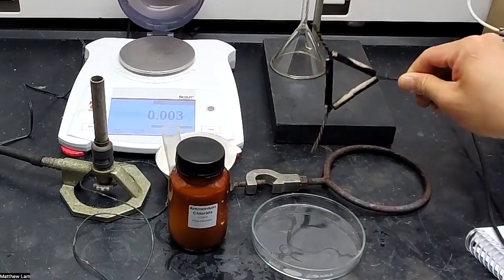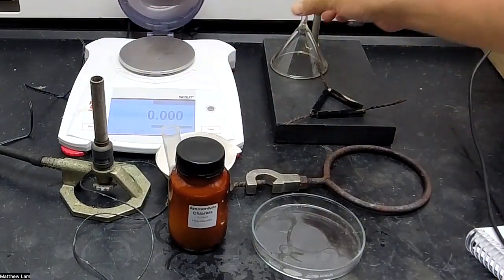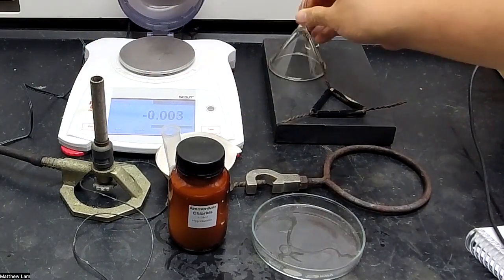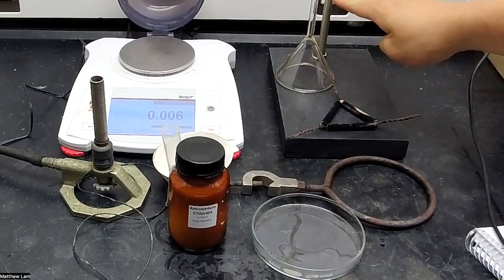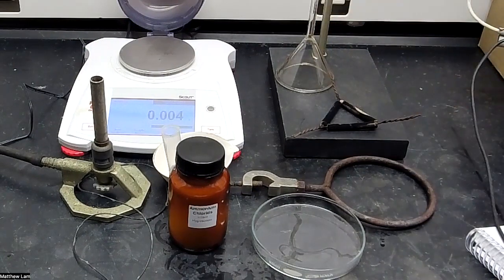We also have a triangle wire that I already pre-burned, a funnel, and a ring stand back here. You can't really see the top of the stand, but this is a ring stand. We'll see it later.